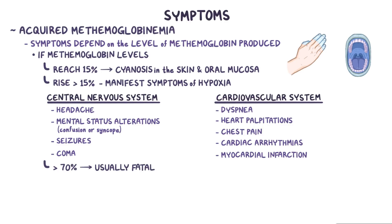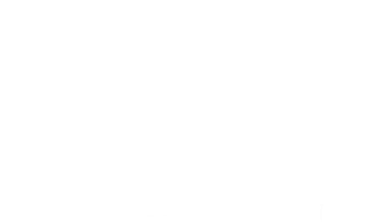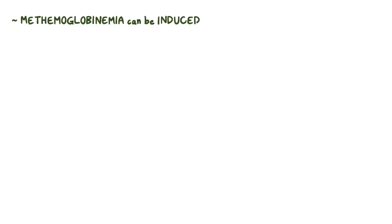Levels that are higher than 70% are usually fatal. Methemoglobinemia can be fatal, but surprisingly, it can also be induced to treat other fatal conditions.